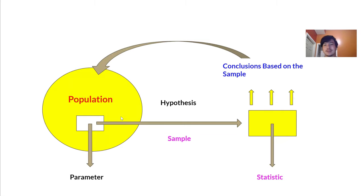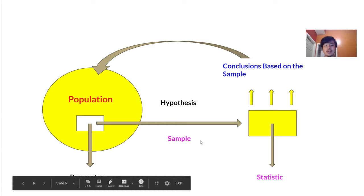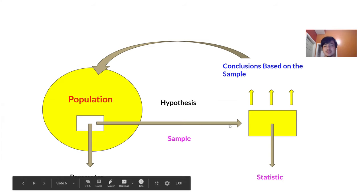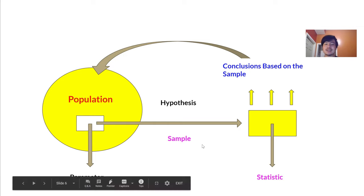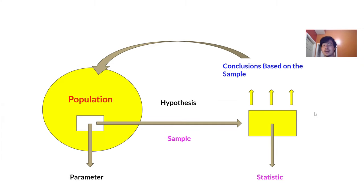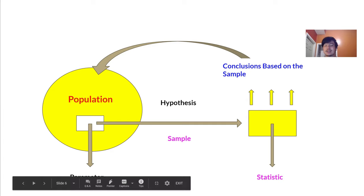A few more quick terms: in the vegetarian example, we want to find out a 'parameter' about the global population — how many vegetarian people exist in the world is a parameter. But we can't find that parameter directly. The best we can do is take a sample and estimate based on it. When we ask our sample how many people are vegetarian, we're collecting a 'statistic.' A statistic is to a sample what a parameter is to a population. Those are important terms.